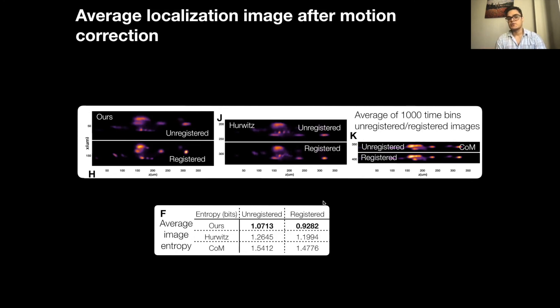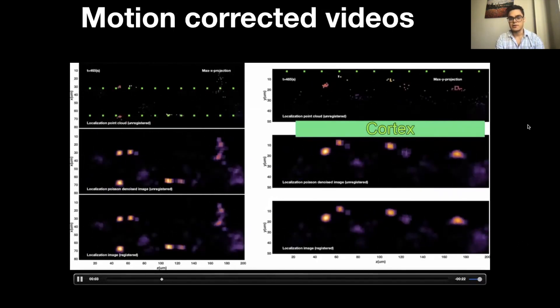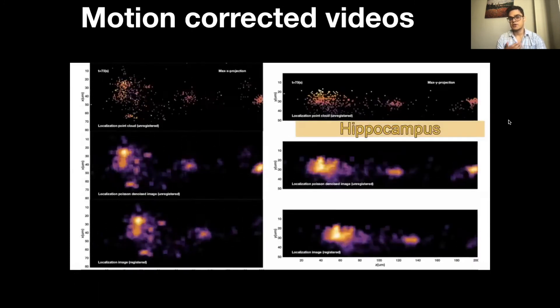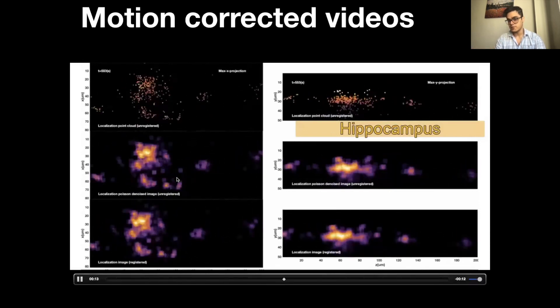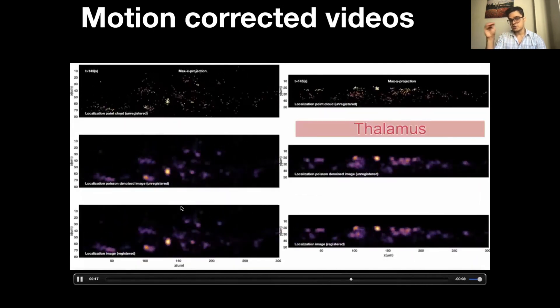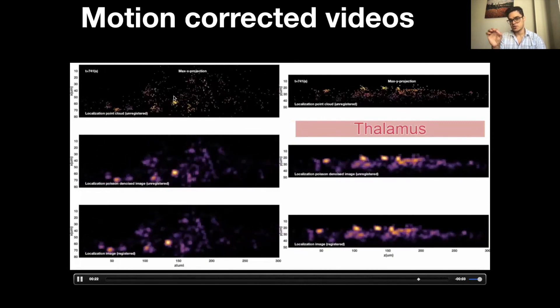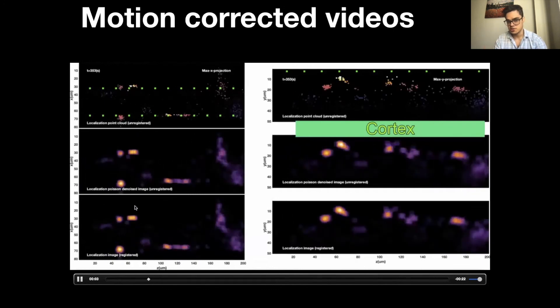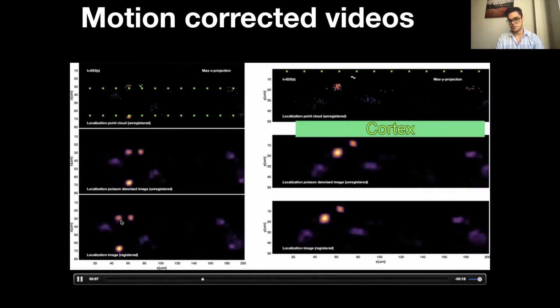To qualitatively visualize our motion correction results, we can generate videos of the localization point clouds before and after motion correction for different regions of the brain. Here we can clearly see the stabilization of motion in both the hippocampus, the thalamus, and the cortex. In the top you see the point clouds in a raw format that shows the motion. In the middle you see the localization images before doing motion correction. In the bottom you see localization images after the motion correction, showing that the localization images are stable over time.